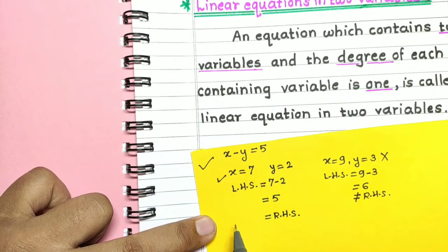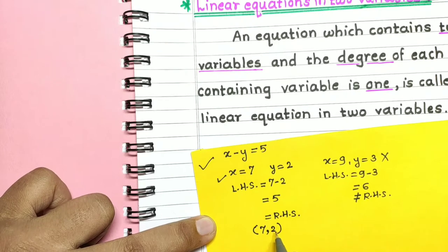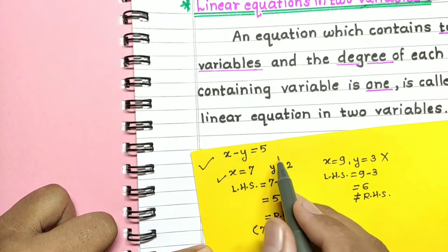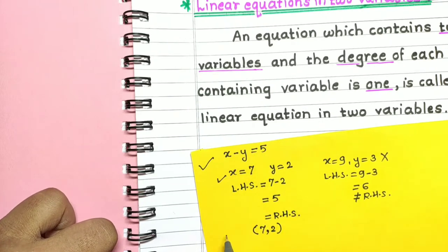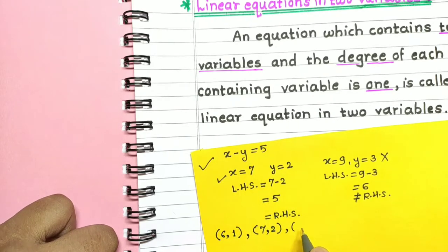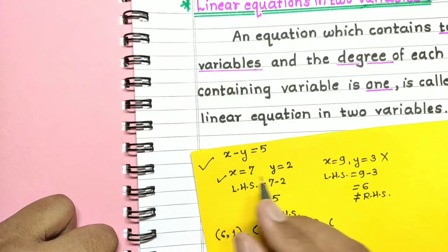Conventionally we write this solution as an ordered pair — two numbers separated by a comma in round brackets. You can observe that we can find infinitely many such ordered pairs which satisfy this equation. For example, if x is equal to 6, then y should be 1, giving the ordered pair (6, 1). If x is equal to 8, y is equal to 3.